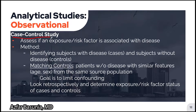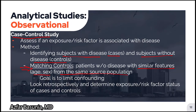For a case control study, the goal is also to assess if an exposure or risk factor is associated with disease. Investigators first identify subjects with the disease, known as cases, and subjects without the disease, known as controls. Matched controls are patients without the disease with similar features to the cases, such as age and sex distribution, from the same source population. The goal of matching controls is to limit confounding — factors associated with both the exposure and the outcome that can potentially distort study results. Frequently, demographic factors such as age and sex are confounders.